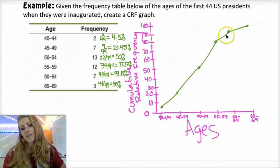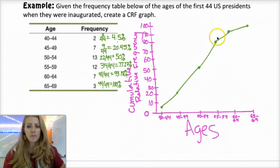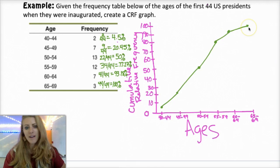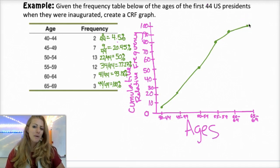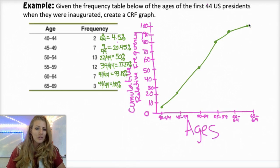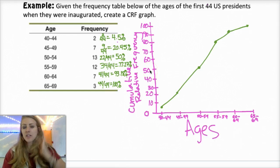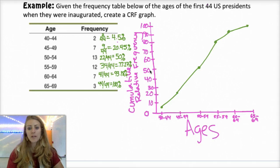And then it kind of levels off a little bit here, which means the extreme values are towards the end. So it's probably kind of skewed to the right a little bit.